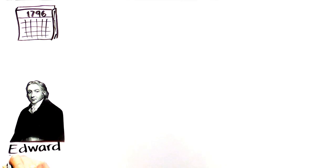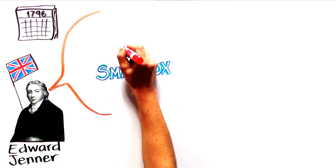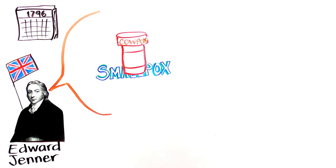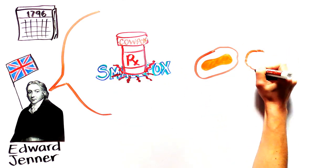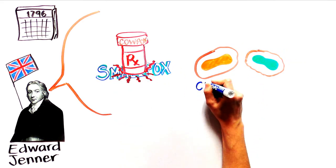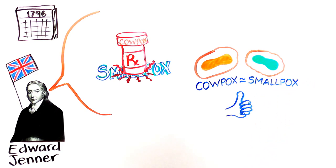In 1796, Edward Jenner, an English doctor, demonstrated that cowpox virus treatment could also prevent smallpox disease. This works because the two viruses look very similar to the human immune system, though Jenner did not know that at the time.